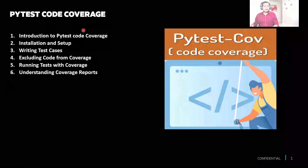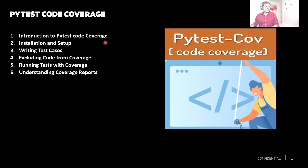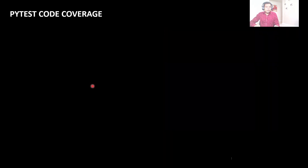We'll start with a very basic definition of code coverage and how we calculate it, then move on to installation and setup, which is very easy and quick. Then we'll see some basic examples — writing our own simple test cases and measuring coverage on them. We'll also see how to exclude sections of code from coverage measurement, different ways of running code coverage, and at the end how to read the reports.